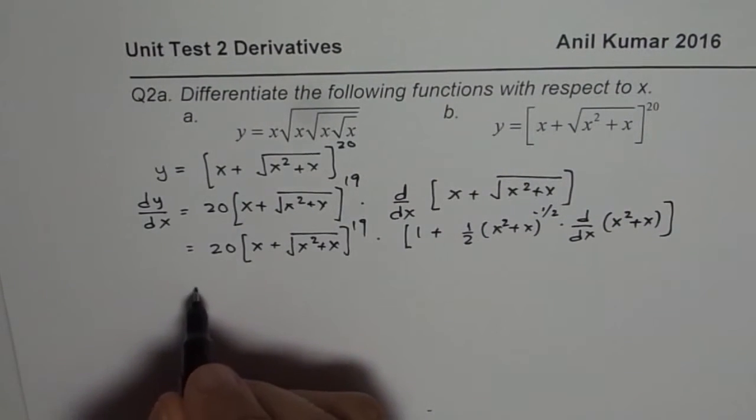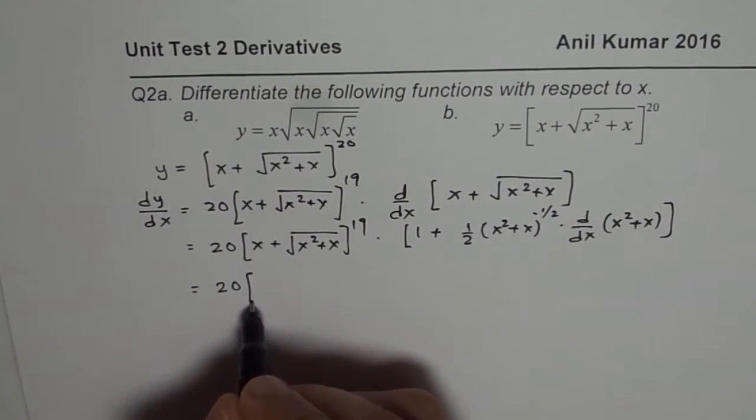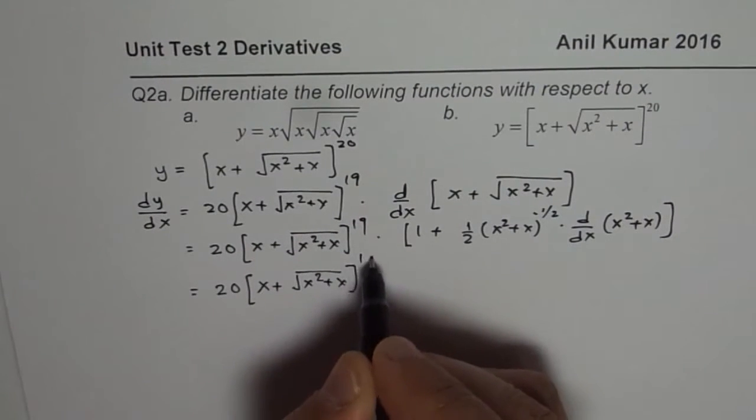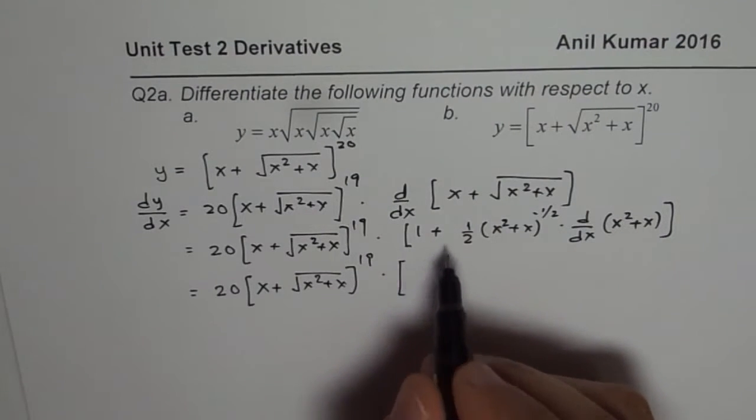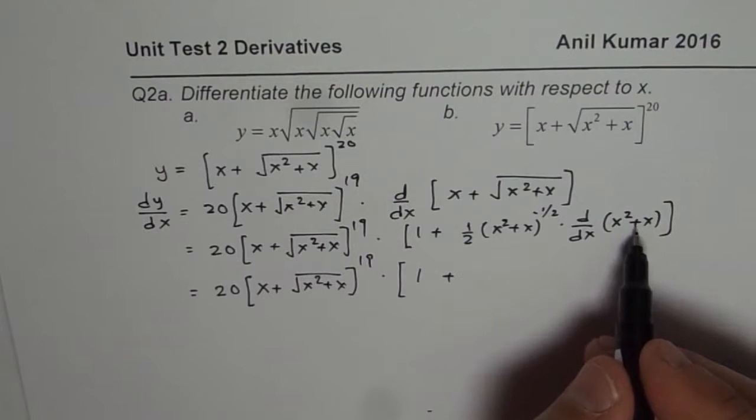So that is how chain rule is being applied. We continue this: 20 times x plus square root of x squared plus x to the power of 19 times. Here we have 1 plus, 1 plus, derivative of this function is 2x plus 1.